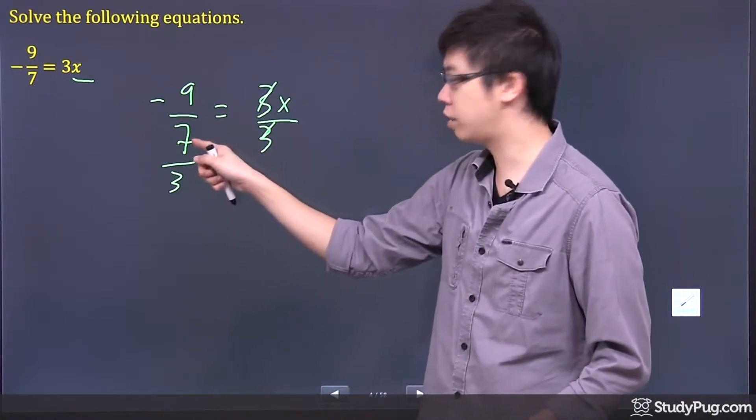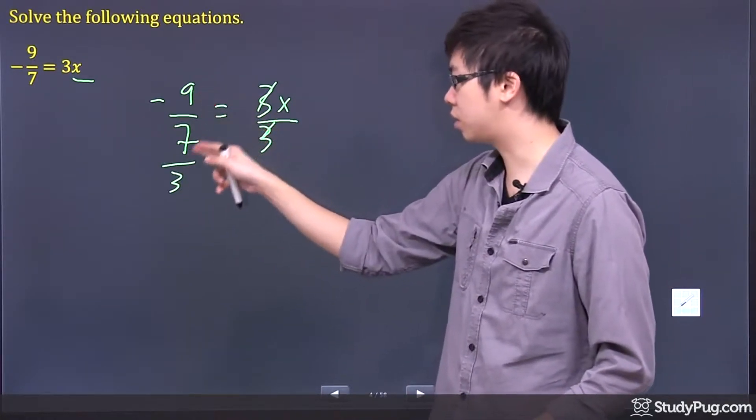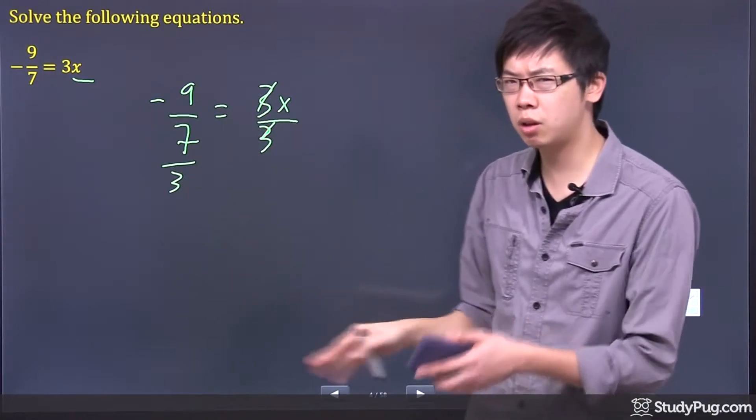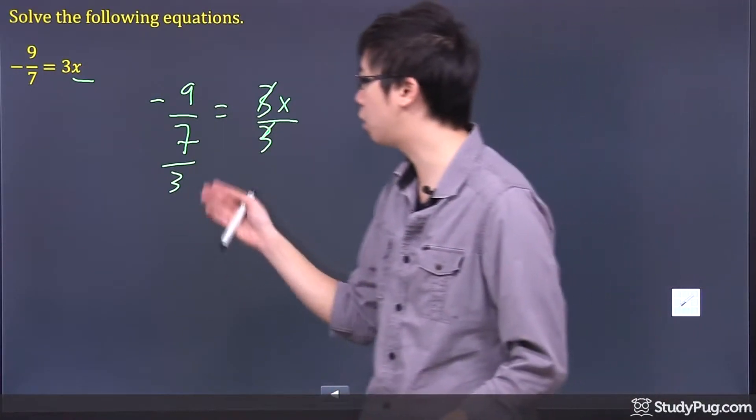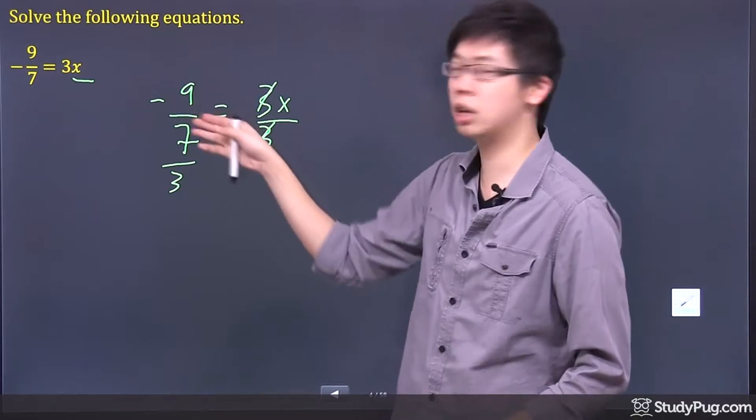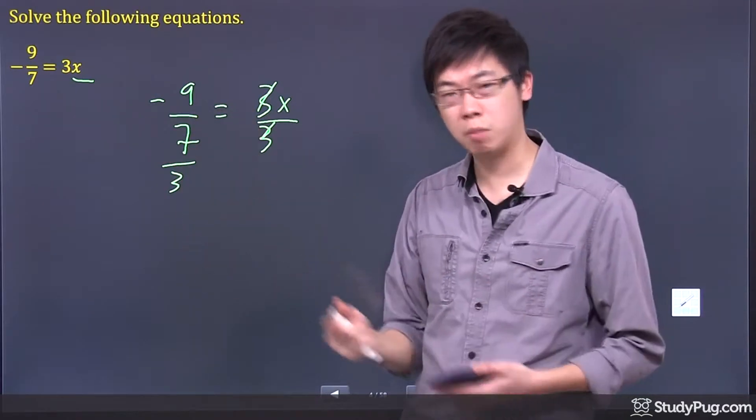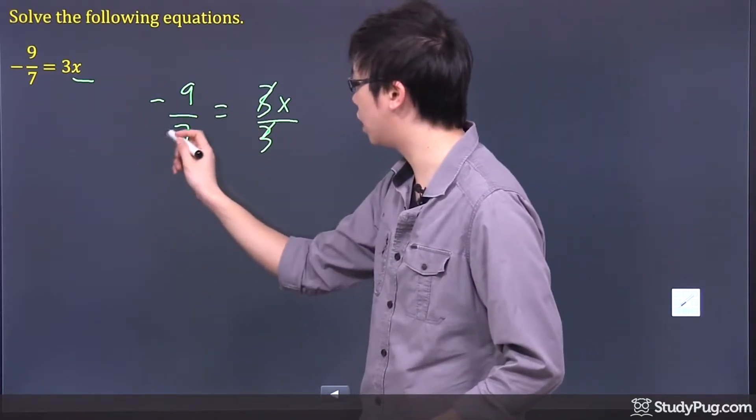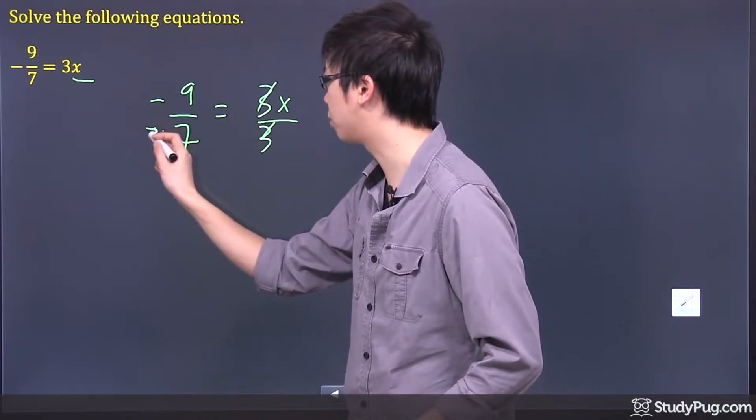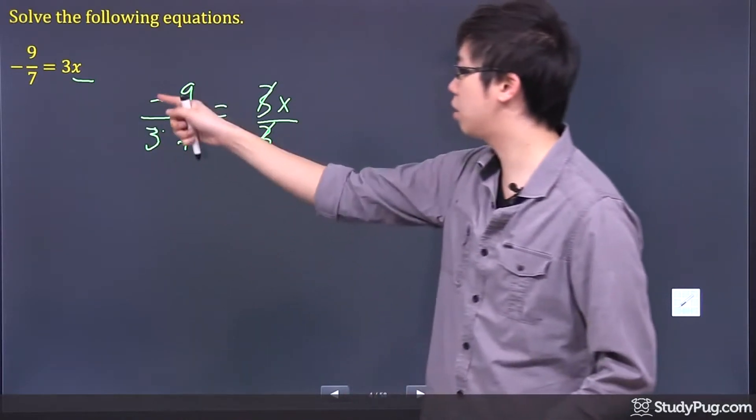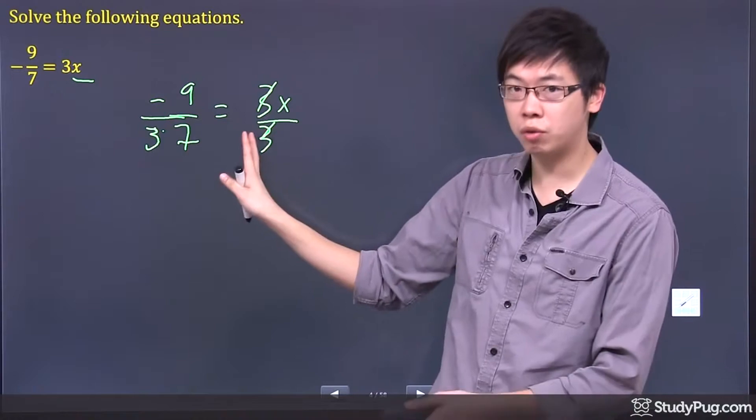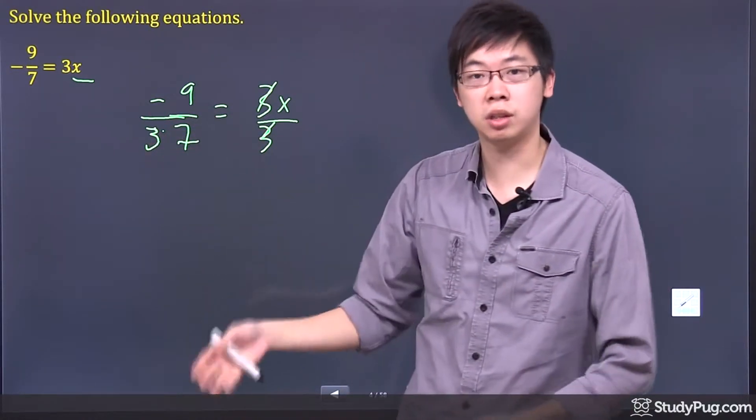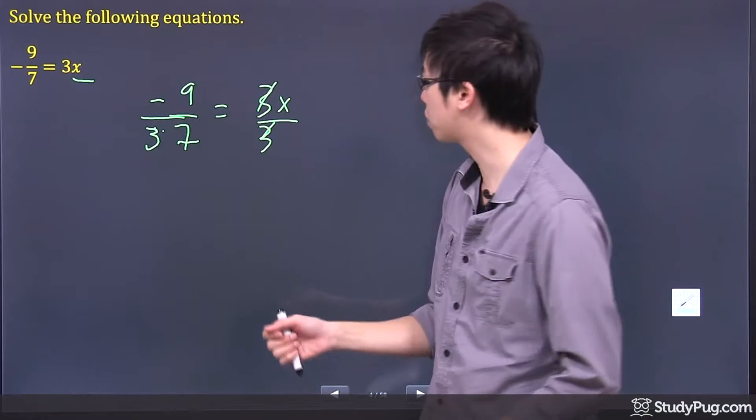Now, it's not the 7 over 3. It's the 9 over 7 divided by 3. Now, sometimes it looks kind of confusing, but technically, when you divide, if you take a fraction and divide by another number, you can actually just pretend that 3 is just down here. It's actually negative 9 over 7, the original fraction, and there's a 3 right beside the 7. It's a denominator because you're dividing it.